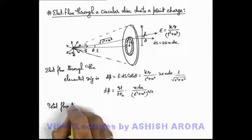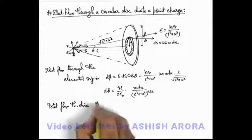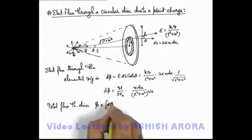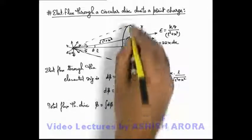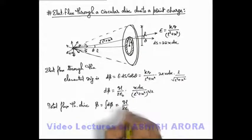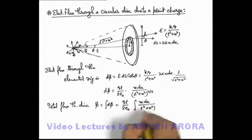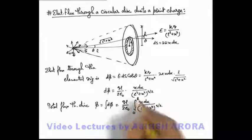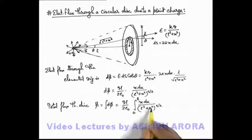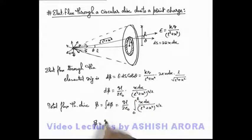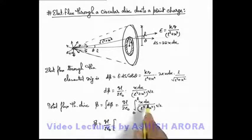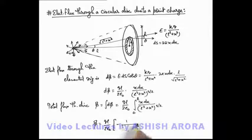And now we can find out total flux through disk by integrating this dφ within limits from zero to r. So here this ql by 2 epsilon not is a constant we integrate x dx by l square plus x square to power 3 by 2 from zero to r, which is the standard integration.